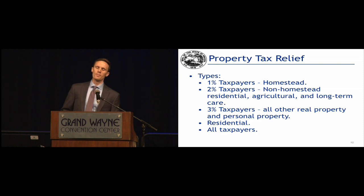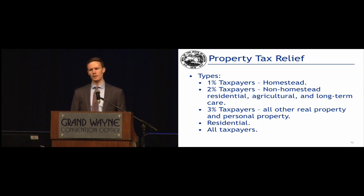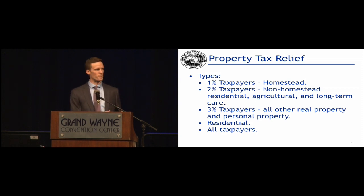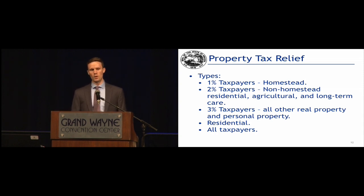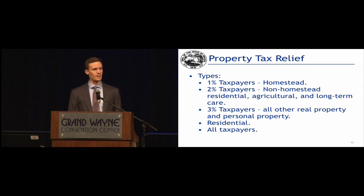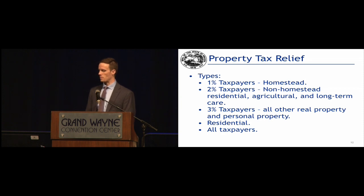There are a variety of options that the adopting body has for property tax relief in terms of who they can provide the relief to. The most common options are providing property tax relief to one percent taxpayers — those are homestead taxpayers — or providing relief to all taxpayers, which is going to hit homeowners and also ag and commercial and industrial. Other options include providing relief to two percent taxpayers, three percent taxpayers, or residential taxpayers.